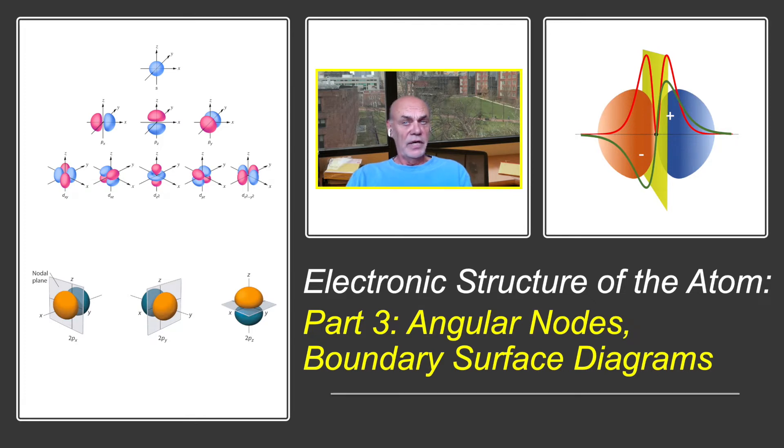We know the s orbital doesn't have any angular nodes, but the p and d orbitals have one and two respectively. We'll then connect the angular nodes to the angular momentum of the orbitals and also discuss the magnetic quantum number, which quantifies the multiplicity of a given orbital.